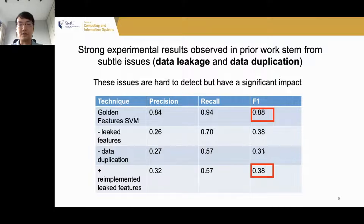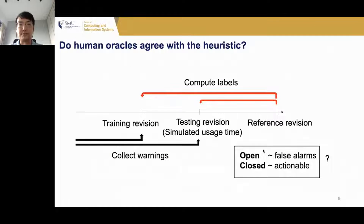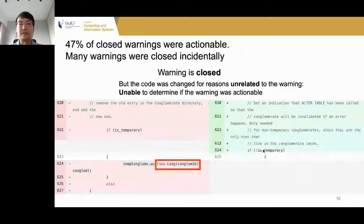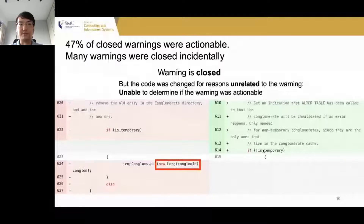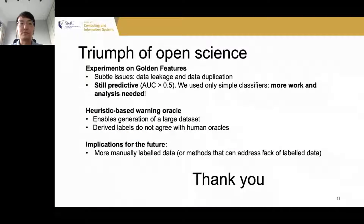We also analyzed the heuristic used to determine ground truth labels. The heuristic assumes that closed warnings are actionable; however, after two authors manually annotated the closed warnings, we found that many were not necessarily actionable — many were only closed incidentally, meaning the code was changed for reasons unrelated to the warning. Our work was a triumph of open science, relying heavily on data and scripts from prior papers. We find that the golden features still suffered from subtle but impactful issues. We note that the golden features were still predictive with AUC greater than 0.5, and our work does not show this line of research is impractical.